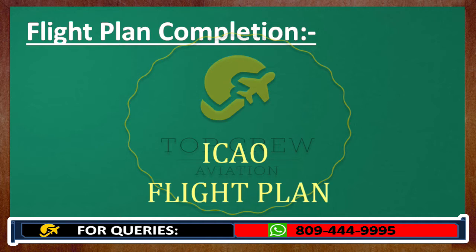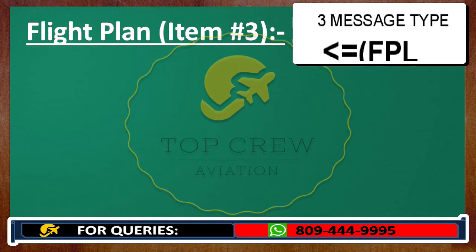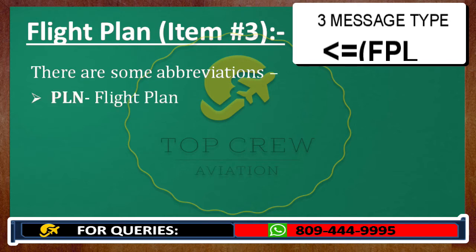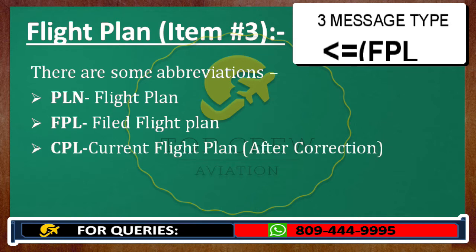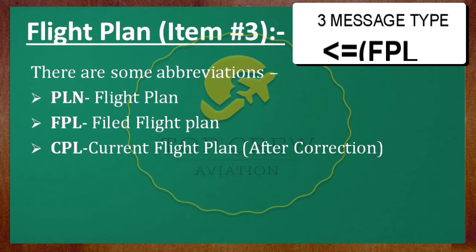For pilots, the flight plan starts from item number 3. There are some abbreviations we need to remember, like PLN — Papa Lima November — which stands for Flight Plan, or FPL. If we have filed a flight plan, it is known as FPL. After filing, if we make any kind of changes and corrections, it would be known as CPL, which stands for Current Flight Plan. CPL is only created after making a correction in the FPL.